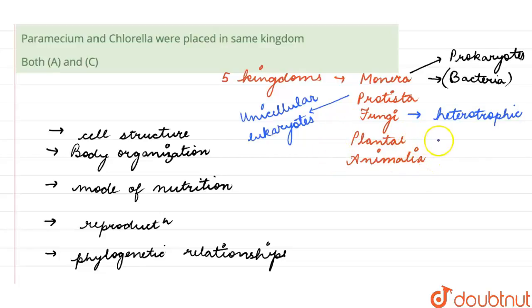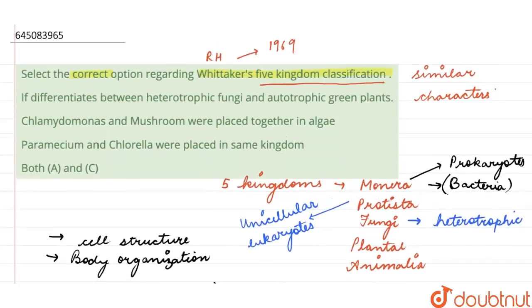That is, they depend on different organisms for their nutrition. Therefore, the Fungi was kept in a separate kingdom. Then plants, all the plants were kept in kingdom Plantae, and then we had Animalia as a separate kingdom for all the animals.